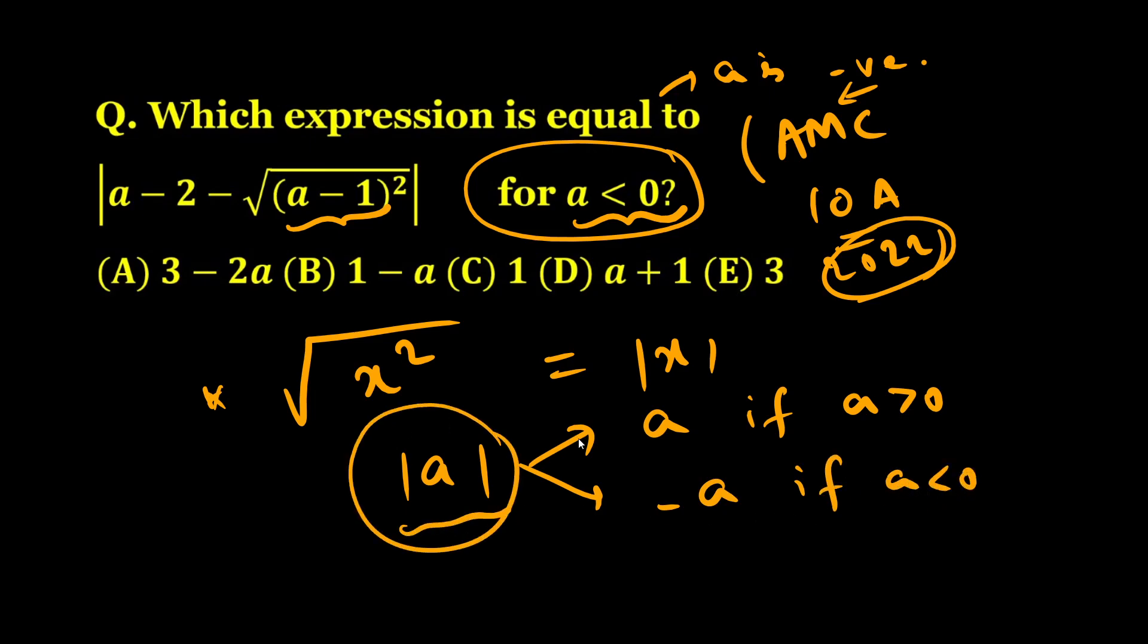Now let's try to solve this one. We have |a - 2 - √(a-1)²| where a is given as less than 0. Don't forget this part.